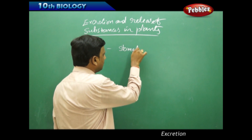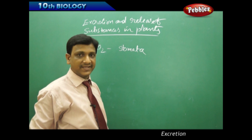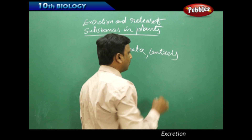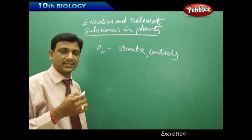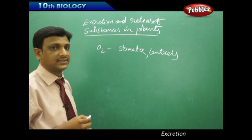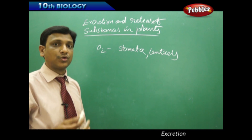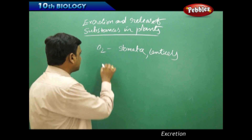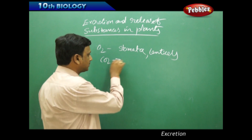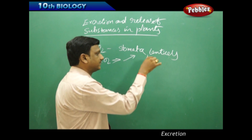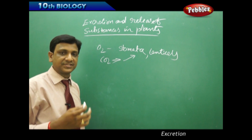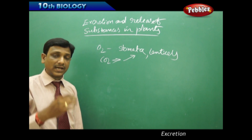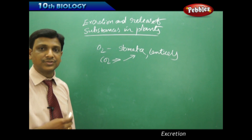Waste oxygen is released out into the atmosphere through stomata — small holes present on the leaves — and lenticels, which are pores present on the stem. Non-chlorophyllous or heterotrophic plants, which cannot prepare their own food and live in the dark, produce carbon dioxide, which is also excreted through the stomata. So waste gases like oxygen and carbon dioxide are released through stomata and lenticels.